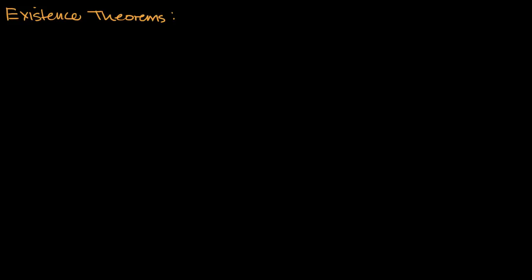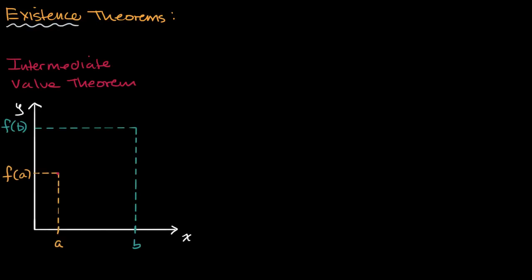What we're going to talk about in this video are three theorems that are sometimes collectively known as existence theorems. The first we're going to talk about is the intermediate value theorem. The common thread here — all of the existence theorems say we're looking for something over an interval: there exists an x value between a and b where something interesting happens.